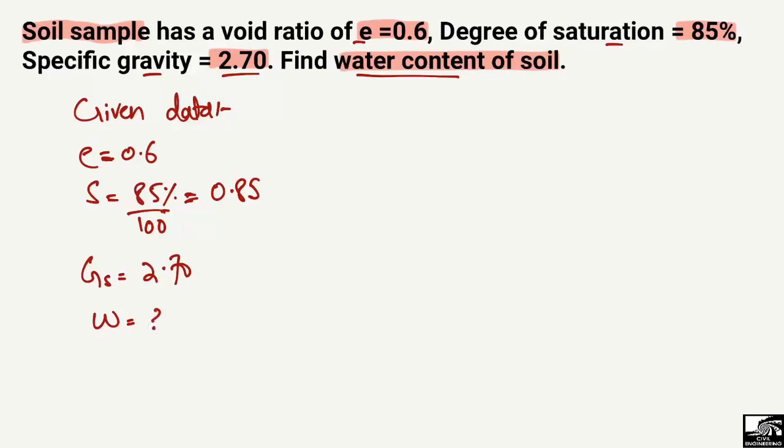There are formulas where we can find the water content of the soil sample. One of the most common formulas in soil mechanics is: specific gravity times water content equals void ratio multiplied by degree of saturation. This is one of the formulas used to find different parameters.